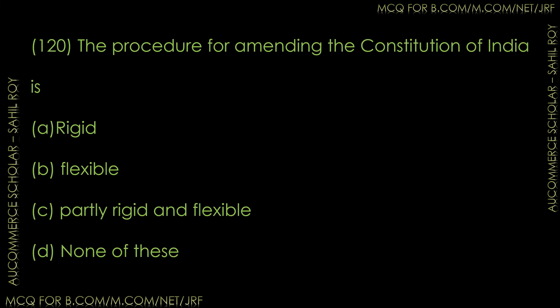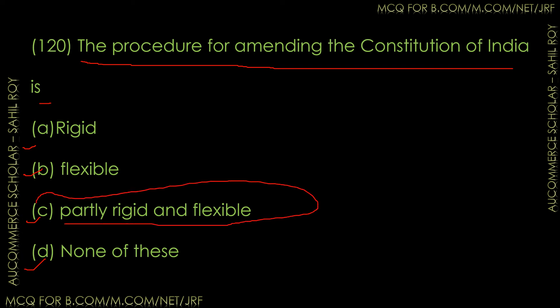Question number 120: The procedure of amending the Constitution of India is — rigid, flexible, partly rigid and flexible, or none of these? The correct answer is Option C — the procedure of amending the Constitution of India is partly rigid and flexible.